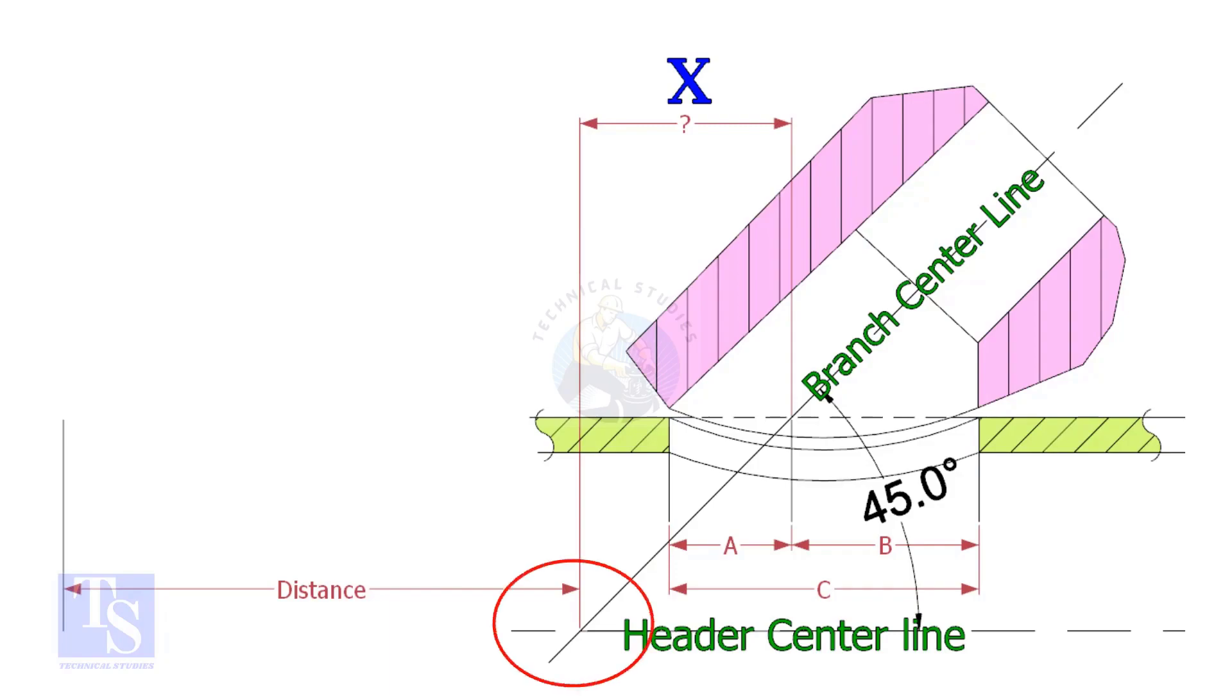This distance is actually on the center of the header pipe. By applying a simple calculation, we can find the actual center that comes on the top of the pipe. If the including angle is 45 degree, the value of X will always be half OD of the header.